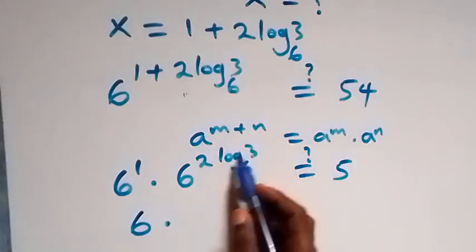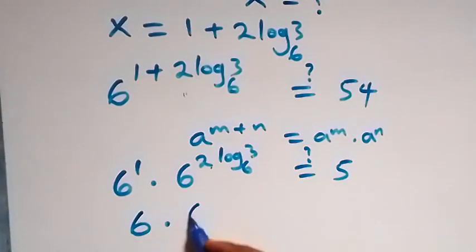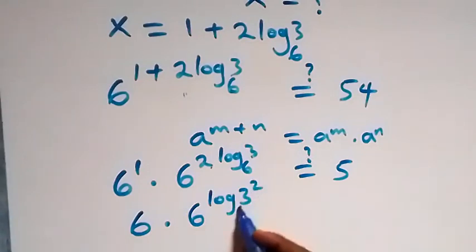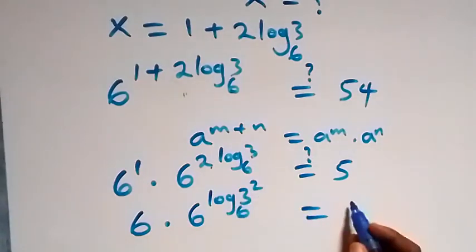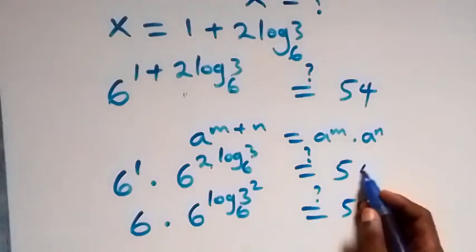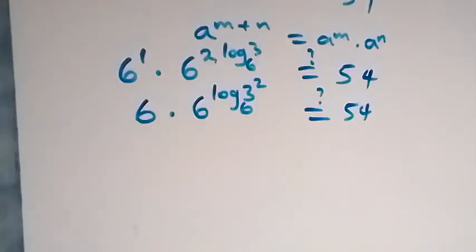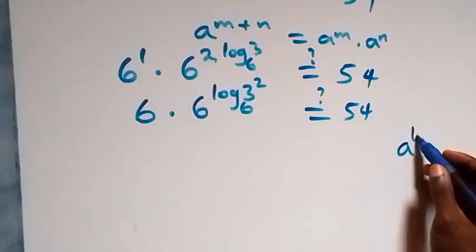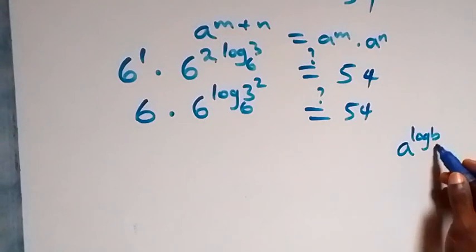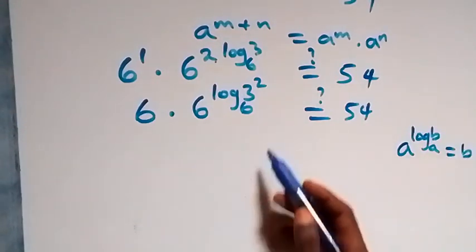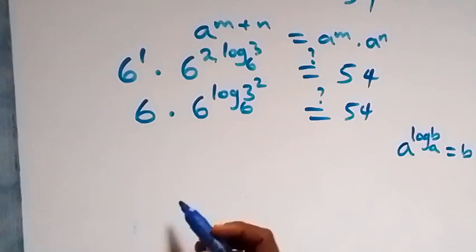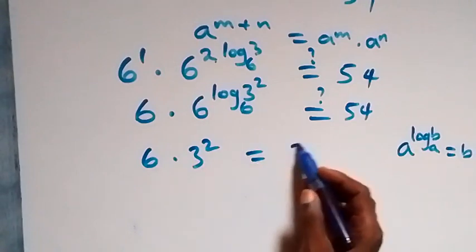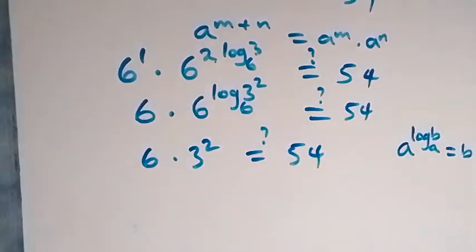Following the law of logarithms, A raised to power log B to base A equals B. So 6 raised to power 2 log 3 to base 6 is the same as 3 squared. We now have 6 times 3 squared equals 54.